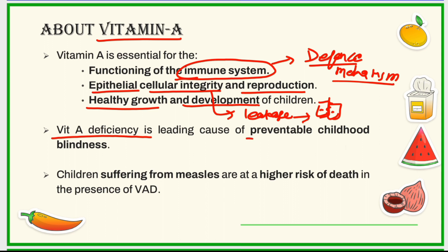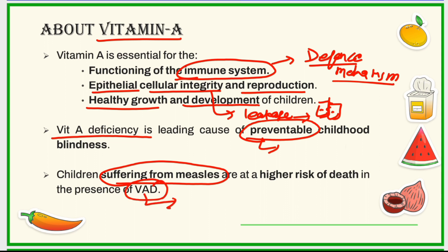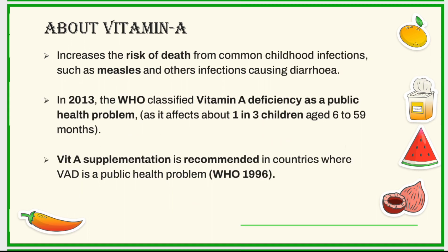It has been found that vitamin A deficiency is one of the leading causes of preventable childhood blindness. This blindness is preventable by applying appropriate means. It has also been found that if a child is suffering from measles and also develops vitamin A deficiency, both of these increase the risk of death in that child, resulting in higher mortality risk.